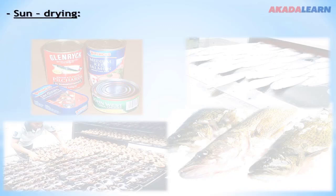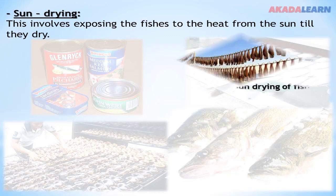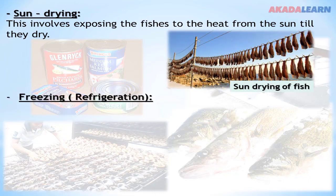Sun drying involves exposing the fishes to the heat from the sun until they dry. Freezing or refrigeration is a method of preserving fish below zero degrees Celsius in a refrigerator, freezer, or cold room. At this temperature, microorganisms will find it difficult to multiply, and hence the fish is preserved.